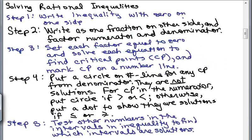Before we begin, let's just look at the steps again. We're going to write the inequality with zero on one side. Then we're going to write as a single fraction on the other side. And then we're going to factor numerator and denominator and go from there. So let's just start with making sure for our problem we have zero on one side and we write as a single fraction on the other side.